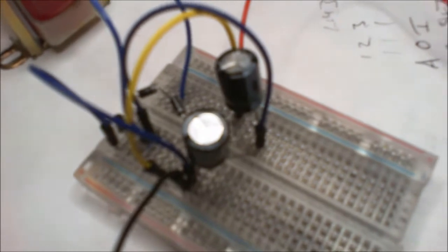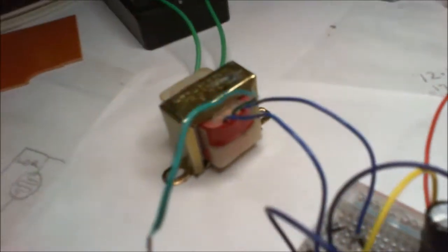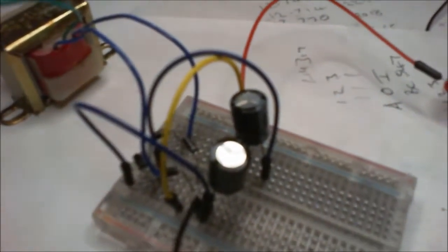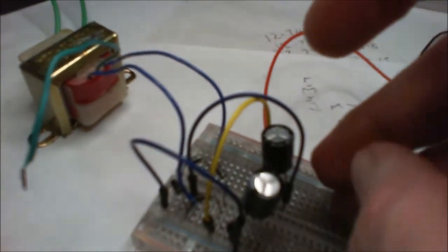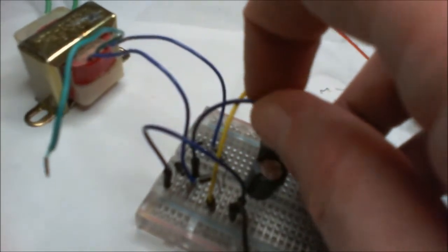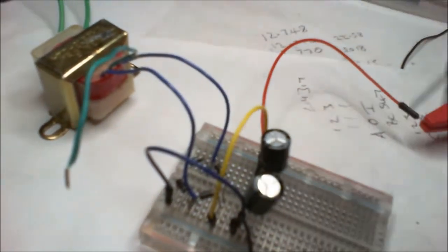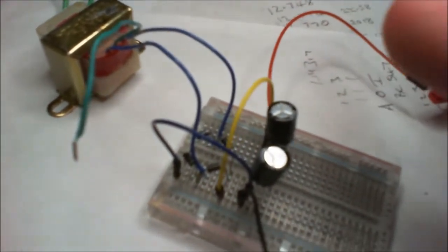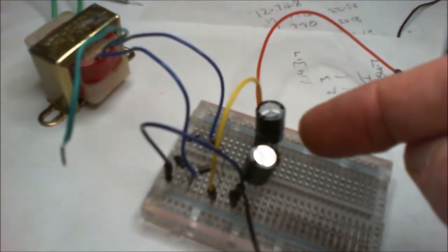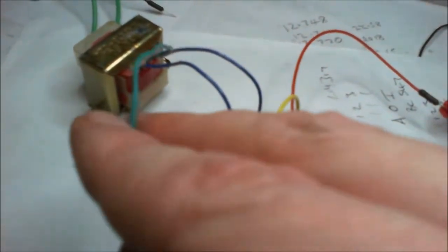Now something else that you can do with this: if your transformer there has a little center tap coming off it like this does here, what you can do is you can take this wire out that you've just used to make it a voltage doubler, take that out, and in between these two capacitors where you had that wire, put your center tap.